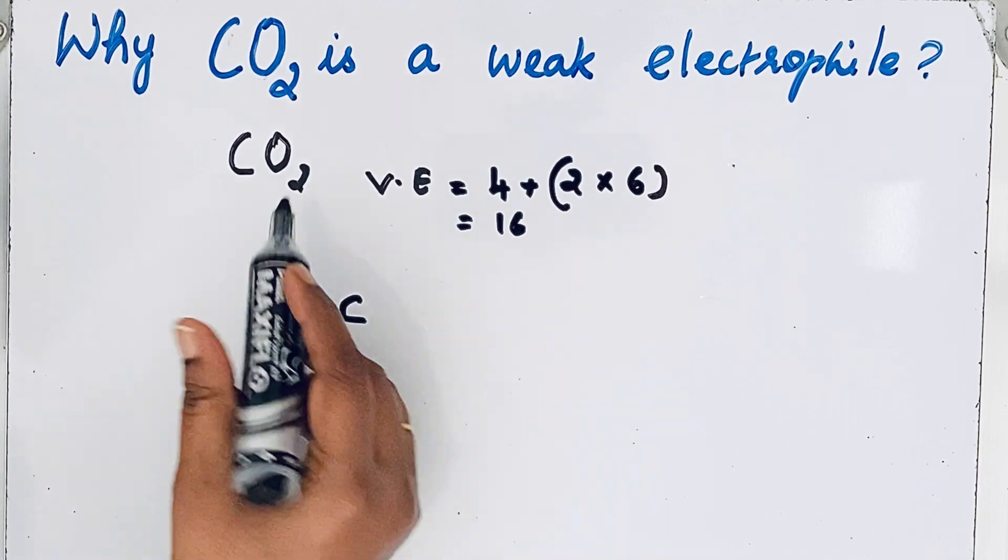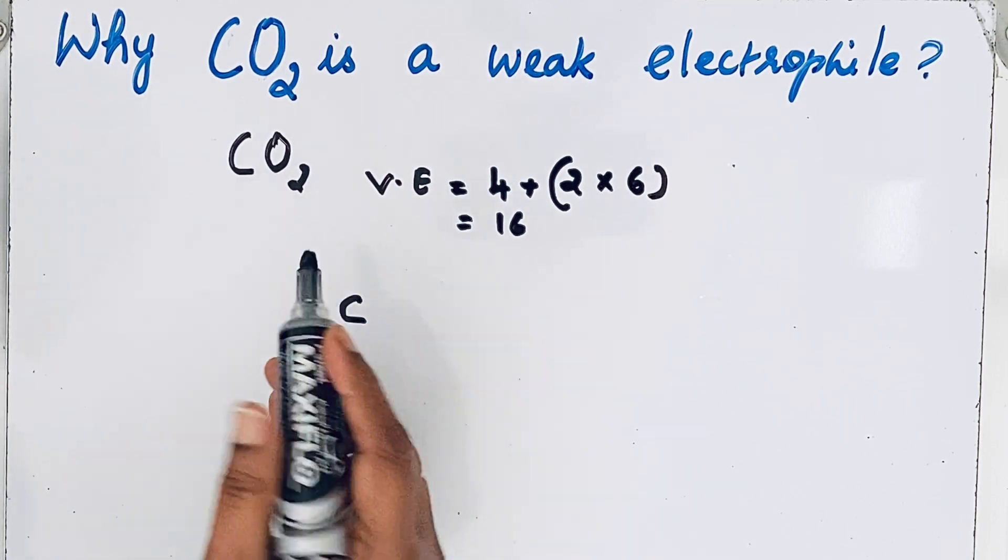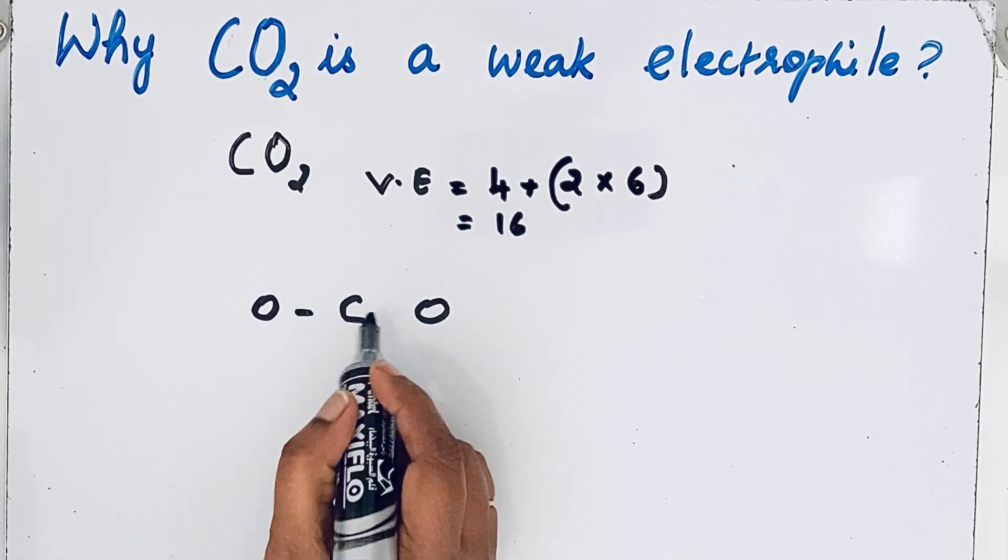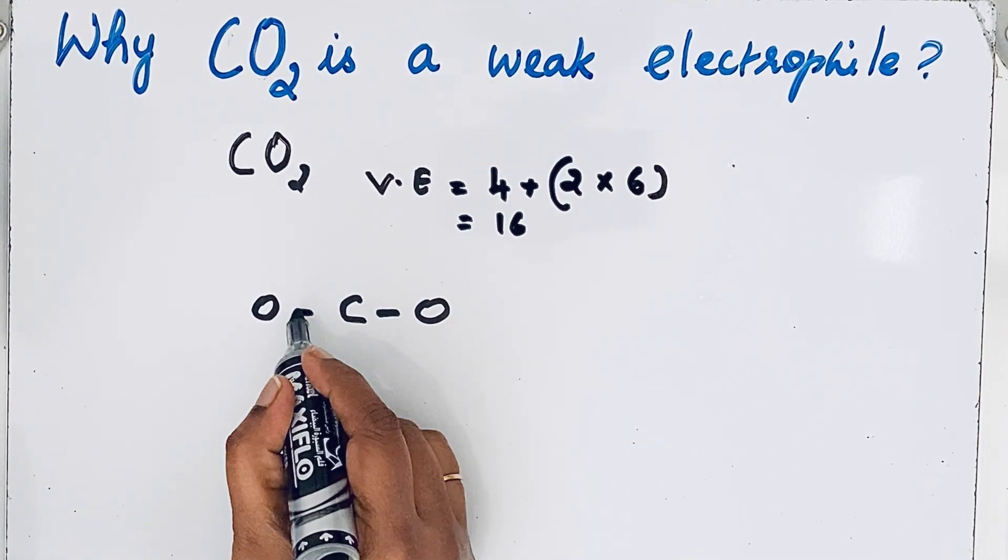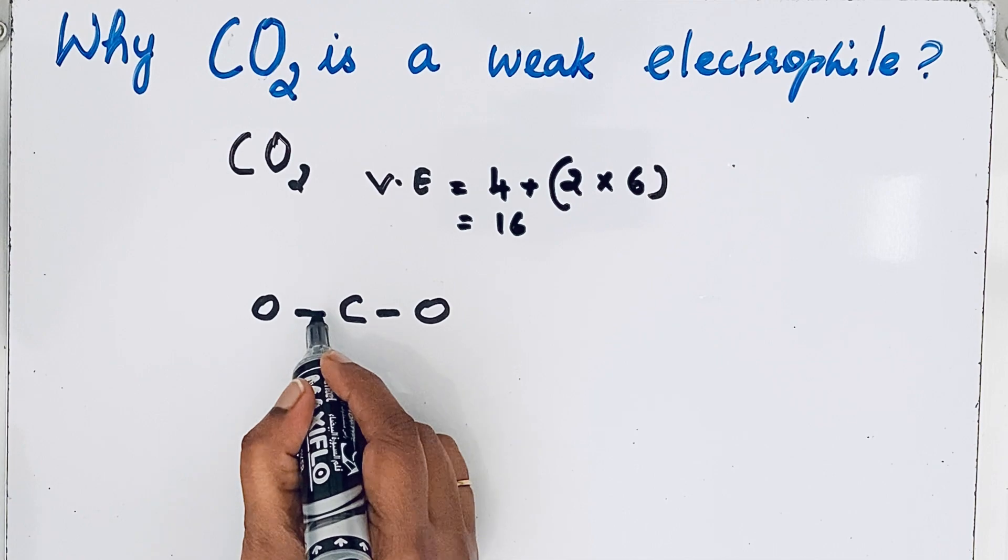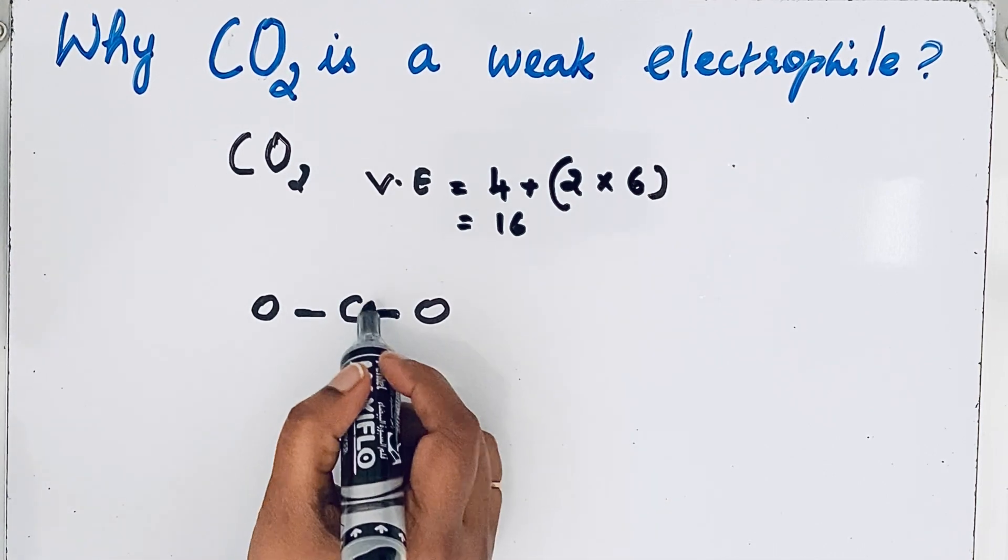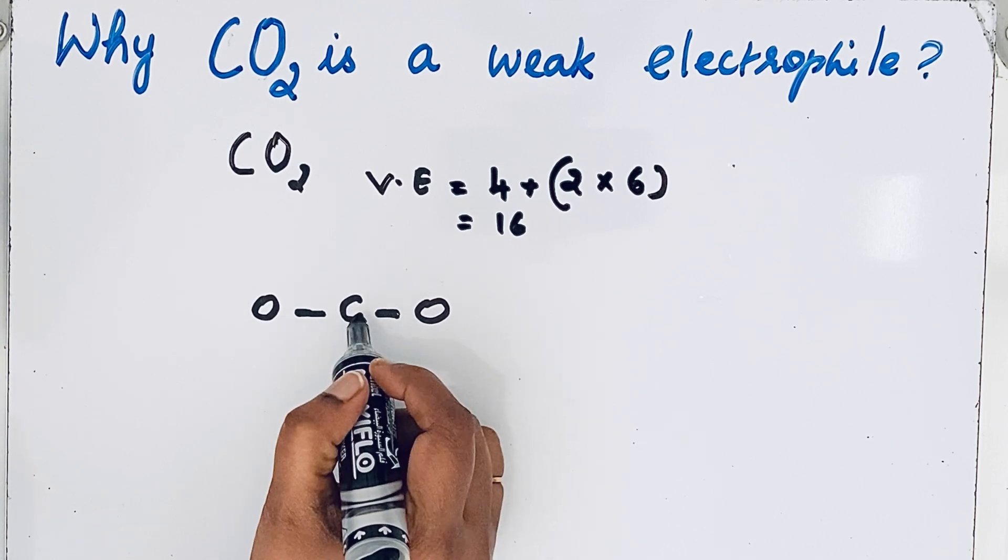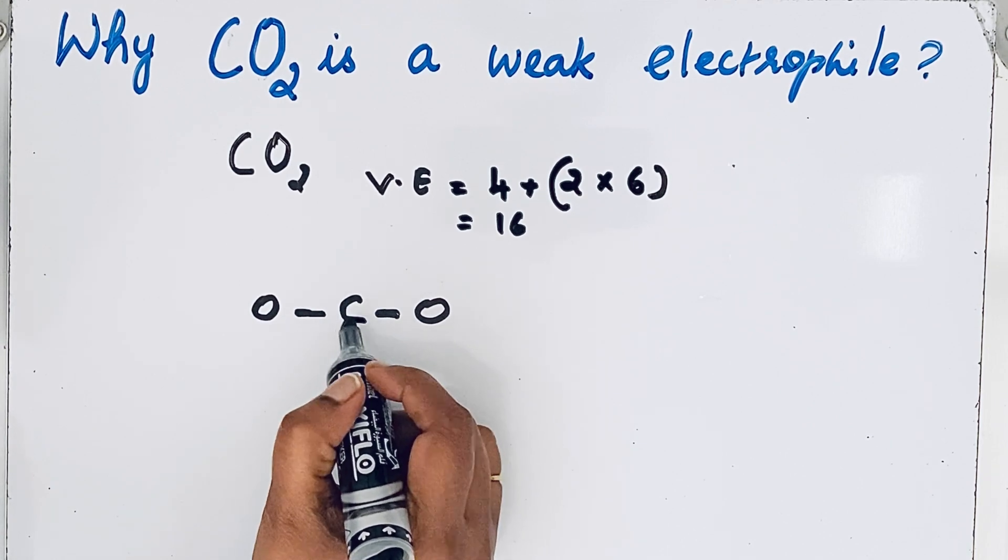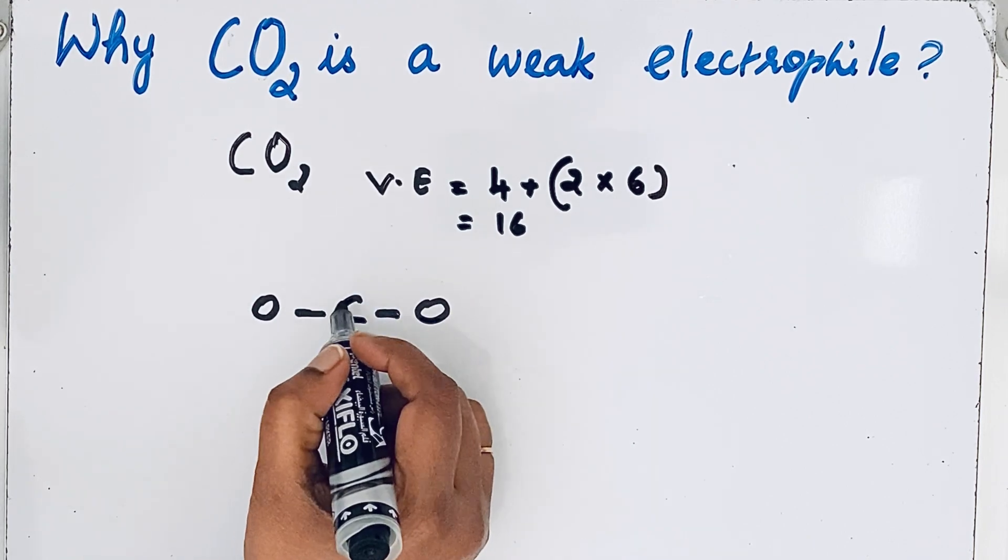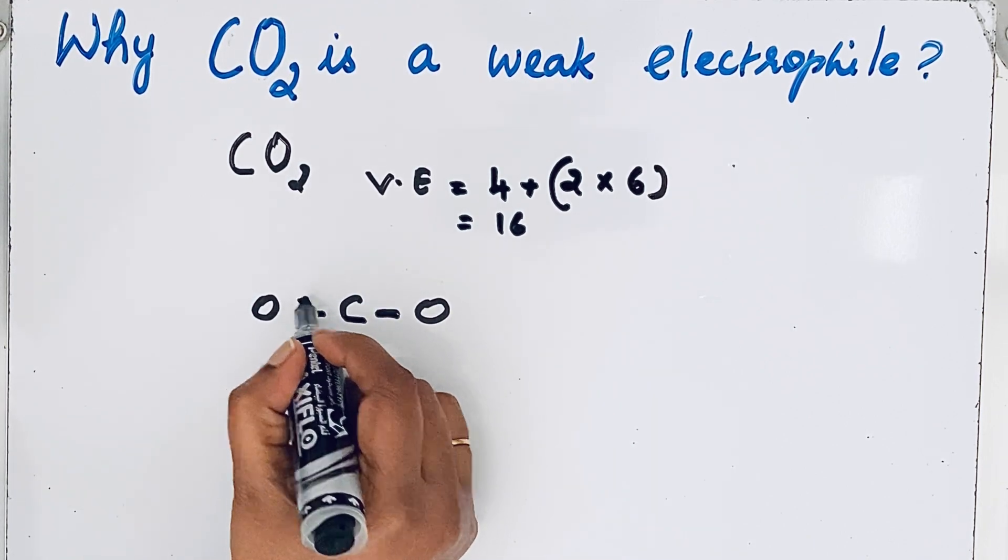Let us draw one single line. This line represents the bond; two electrons are shared. In the center, we have the carbon atom. The octet configuration of carbon should be completed, so we draw two more electrons. Now carbon's octet configuration is completed.